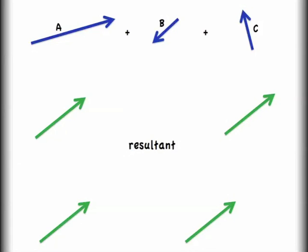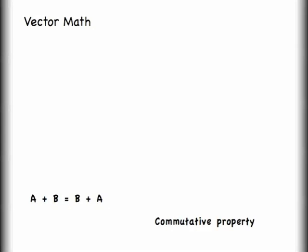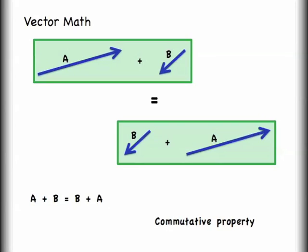This brings up a property of vector addition. Just like in arithmetic, we can say that a plus b equals b plus a. That's the commutative property. This is also true for vectors. The a vector plus the b vector is equal to the b vector plus the a vector.